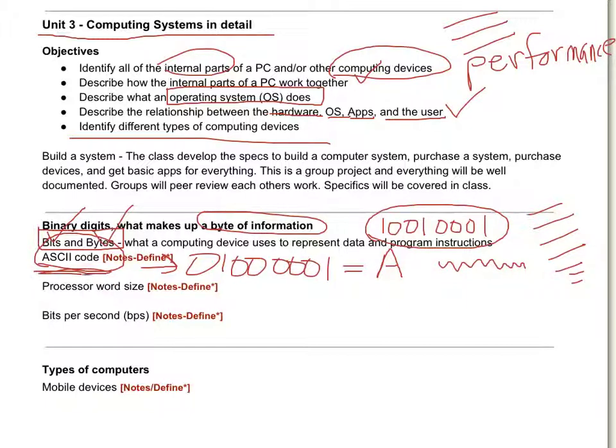We just give one example of the ASCII code representing ones and zeros. Later on, we talk about storage. When a capital A is stored on a disk, this is how it's stored.